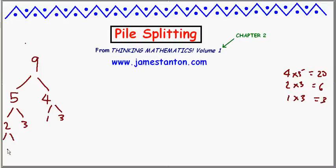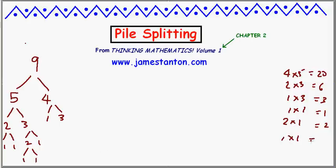The 2 can split into 1 and 1: 1 times 1 is 1. The 3 splits into 2 and 1 — I've got no choice there — 2 times 1 is 2. The 2 splits again: 1 times 1 equals 1. I've still got a pile of 3, which splits into 2 and 1: 2 times 1 is 2. And a 2 pile can split into 1 and 1.